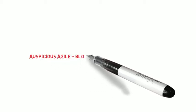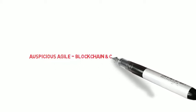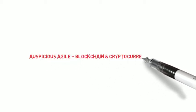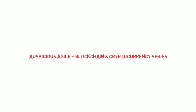Hi and welcome to this week's Auspicious Agile video blog. This is John Okoro. This week we're going to be taking a look at our Blockchain and Cryptocurrency series, specifically Blockchain. Please do click the like button below to like the video, click subscribe, and also the alert bell so you get updates on the latest Auspicious Agile video blogs.